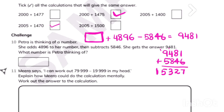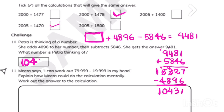Then, since she added 4,896 earlier, we subtract it back. When we subtract it back, we get our final answer: 10,431. That was the original first number.